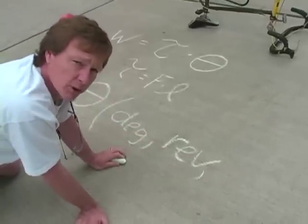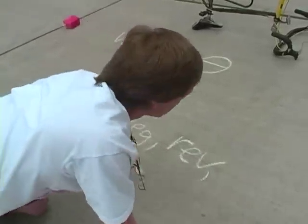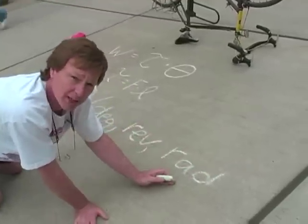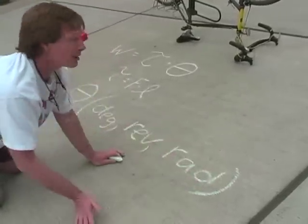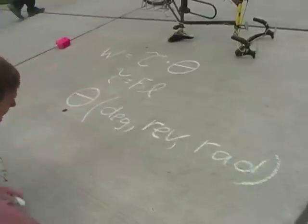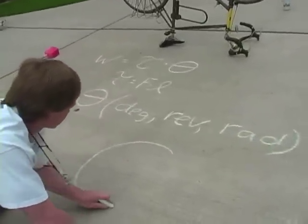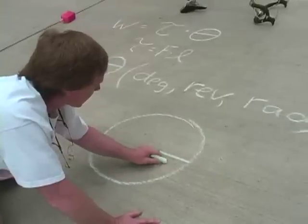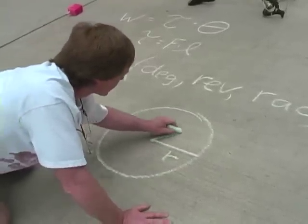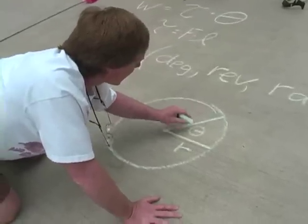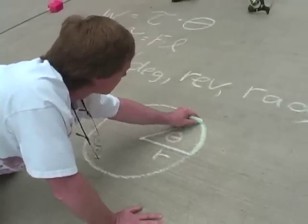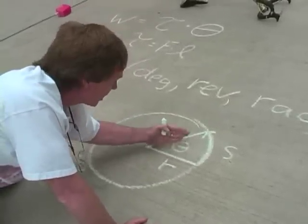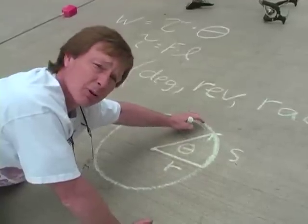Or it can have — the most important unit — it can have radians, abbreviated as rad. Here's a circle with radius r. If we move through an angle theta, we move a distance along the perimeter — we'll call that s. And you can see that as the angle increases, the distance we move along the perimeter increases.